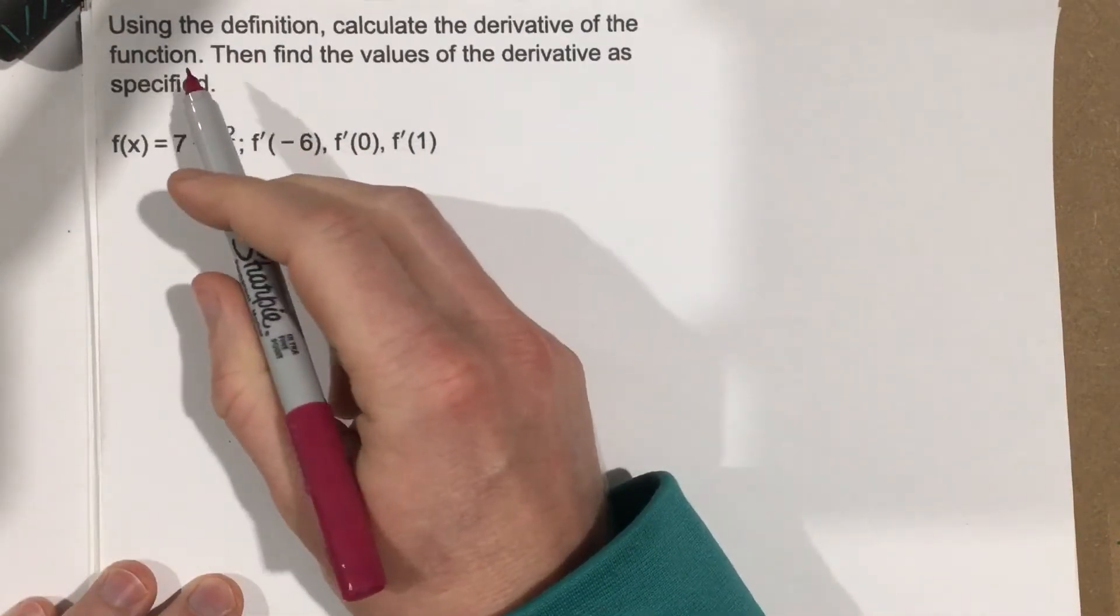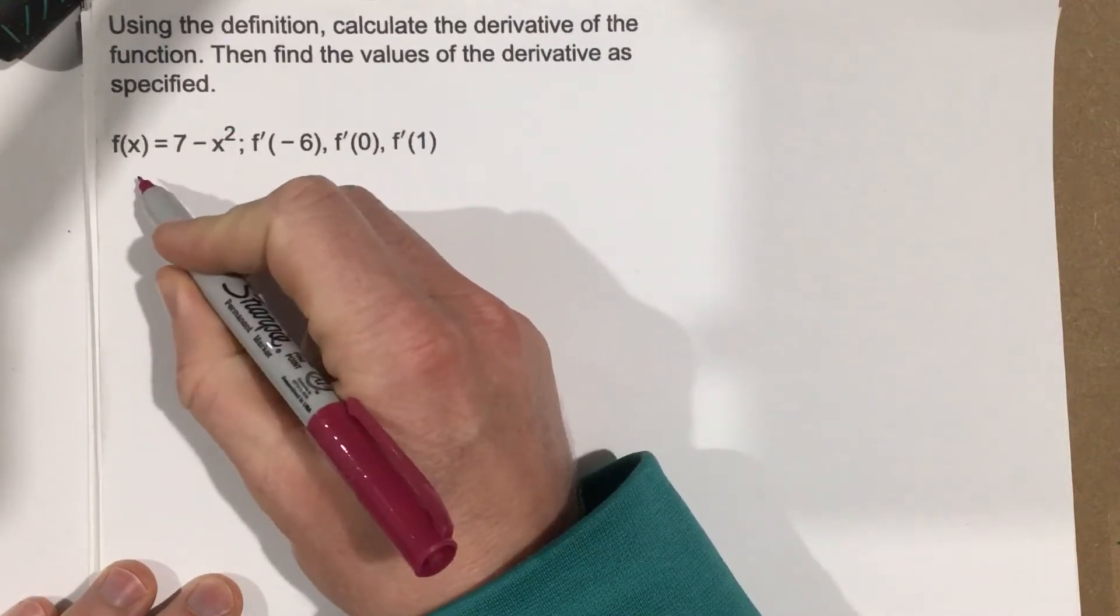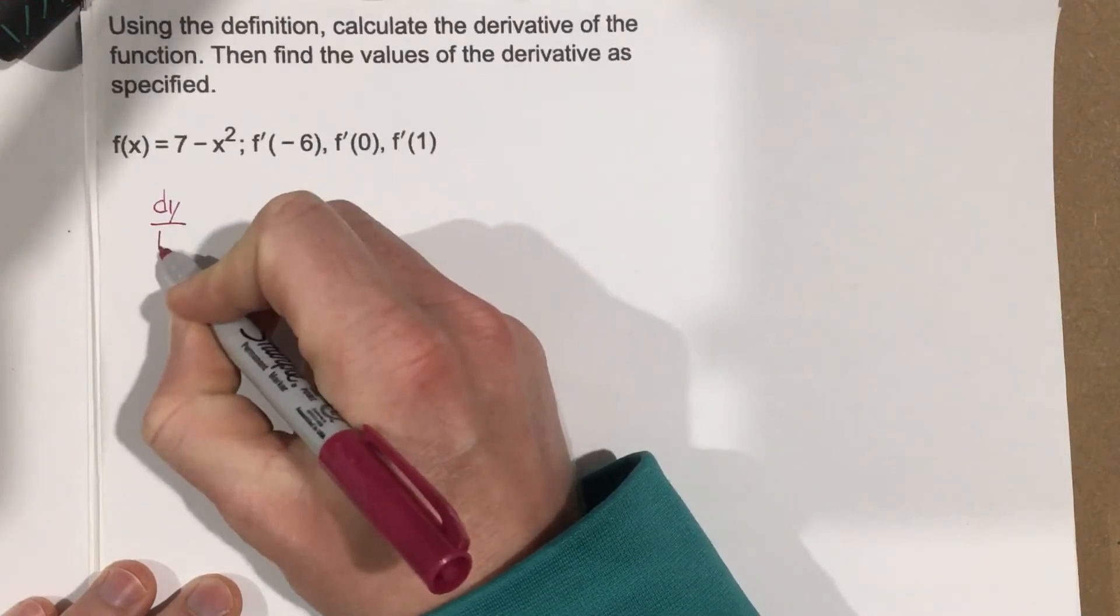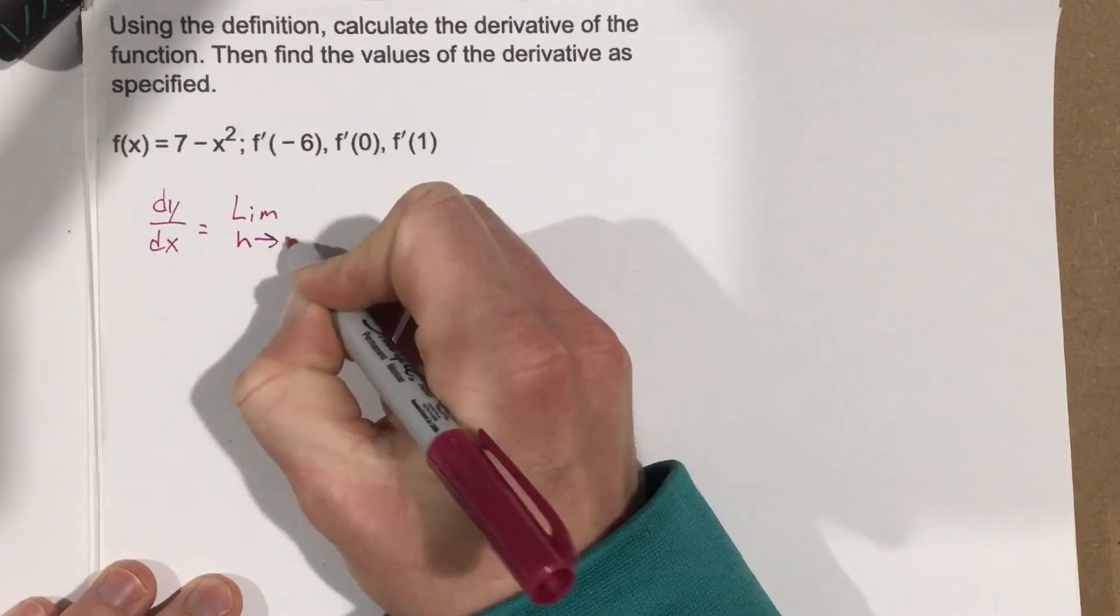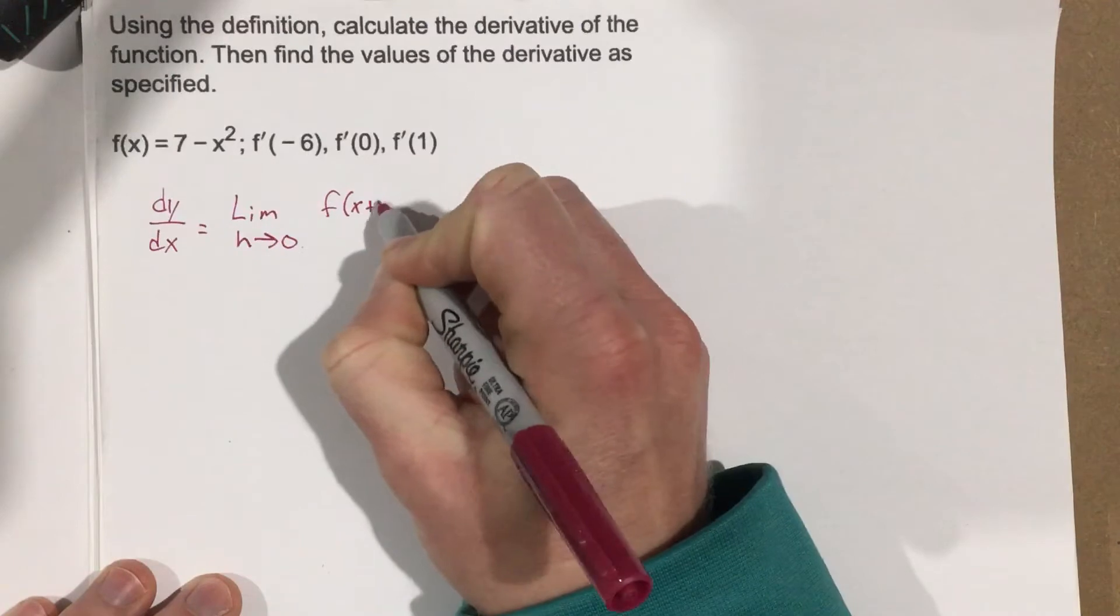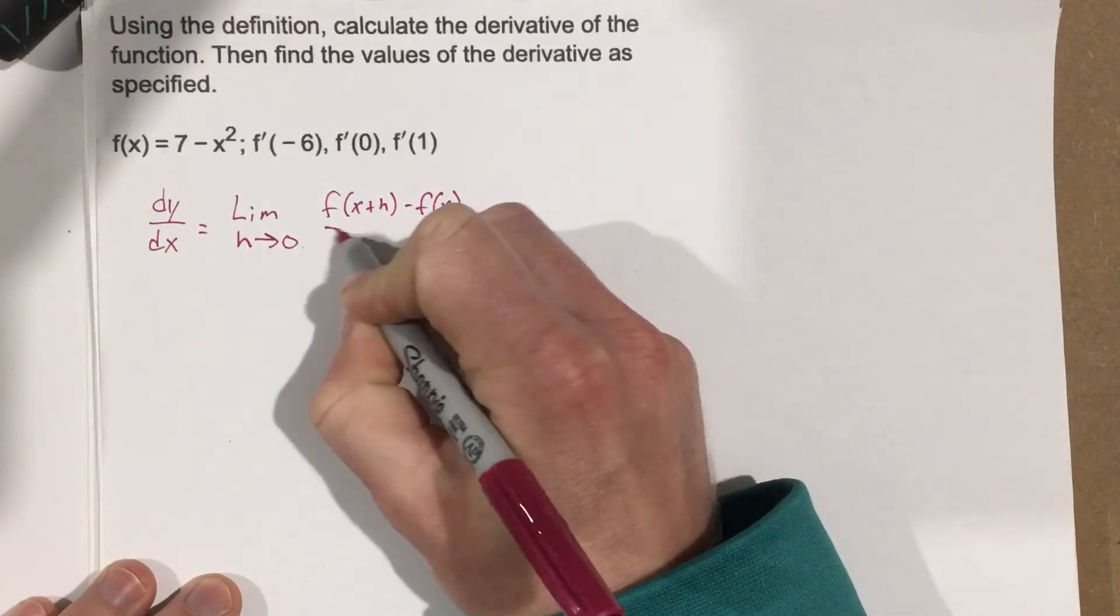We're going to use the definition. The definition for the derivative is that dy over dx is equal to the limit as h approaches 0 of f of x plus h minus f of x all over h.